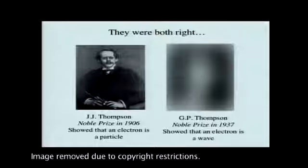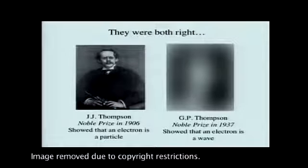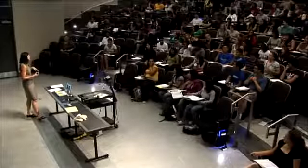Interestingly, J.J. Thompson won a Nobel Prize in 1906 for showing electrons are particles, and his son G.P. Thompson later won a Nobel Prize for showing electrons are waves. It's fun to think of it as a son rebelling against his father — but the nice ending is they're both right: an electron is both a particle and a wave.